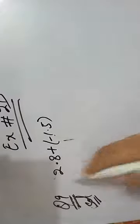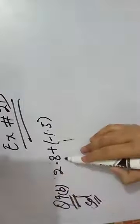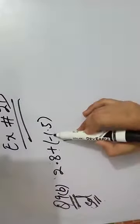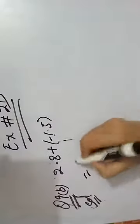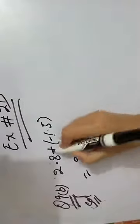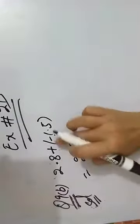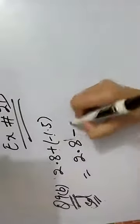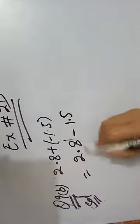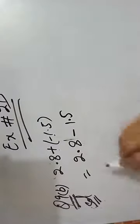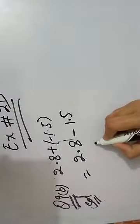Now question number 9, part B, which is 2.8 plus negative 1.5. So let's start our solution. First, we will change the sign: positive into negative is negative. Now we will subtract these decimals, simple like subtraction.